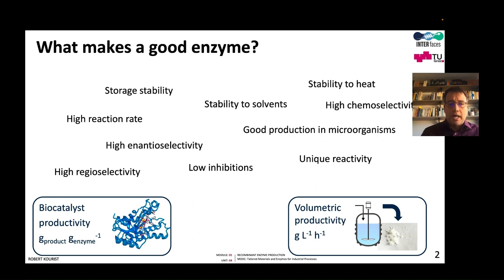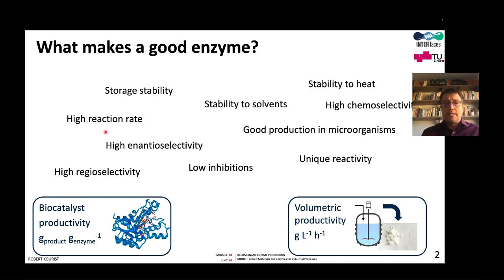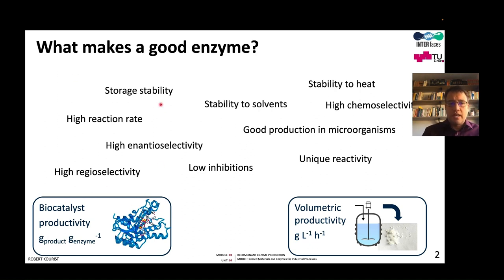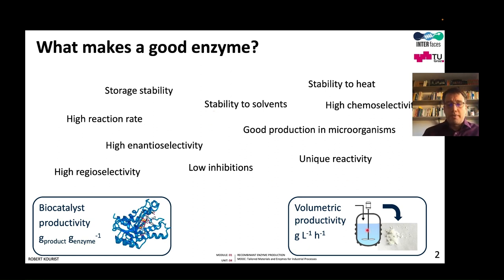In the previous units, I explained properties of enzymes. This can be selectivity, unique activity, rate, and stability. All of these properties determine the success of a process. For instance, they influence the biocatalytic productivity — the activity, rate, and stability — or they determine the volumetric productivity. Here we also have properties like low inhibition.